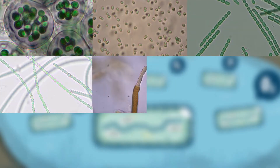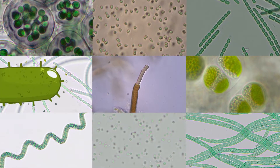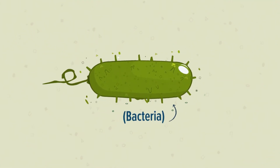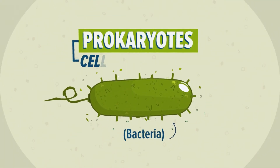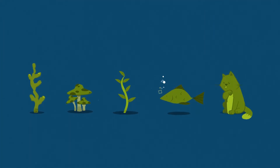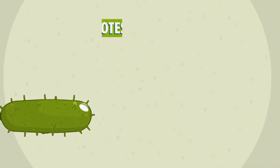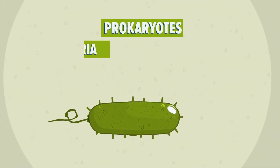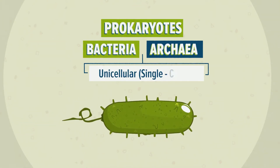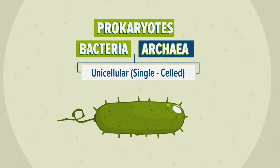Blue-green algae, or cyanobacteria, are, as their name suggests, bacteria, and thus prokaryotes. All self-sustaining and self-generated organisms consist of cells. Prokaryotes – bacteria and archaea – are unicellular or single-celled organisms.